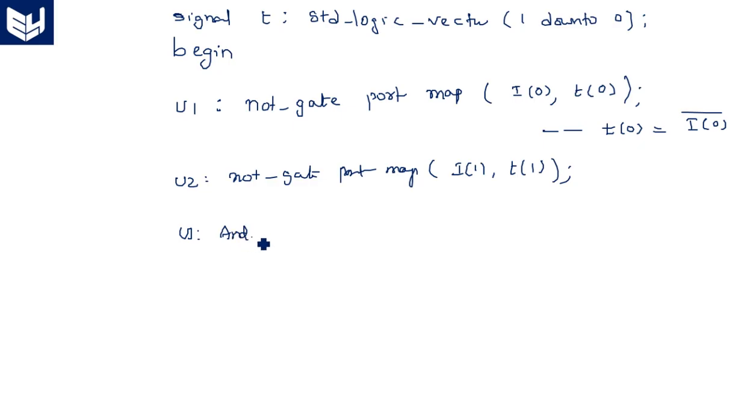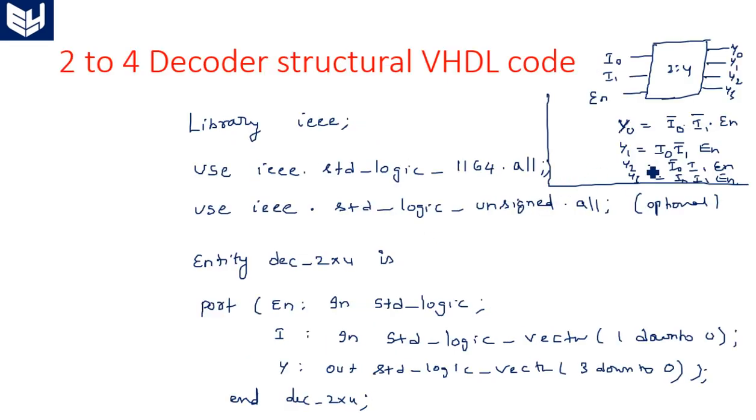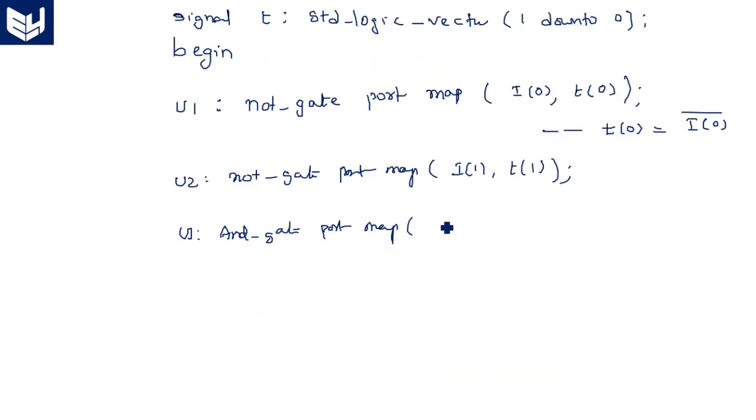Now AND operation. AND_gate port map of. AND operation between these three. What is this I0 bar? T0. What is this I1 bar? T1 into enable. Enable, T of 0, T of 1 and output is Y of 0. Hope you understand.